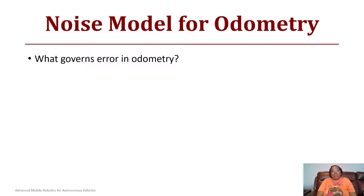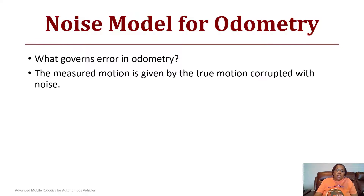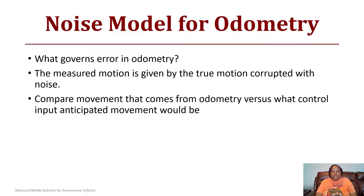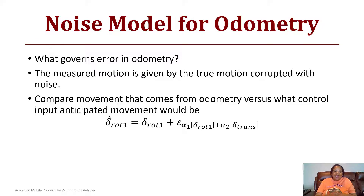What governs error in odometry when you have noise? The measured motion is given by the true motion but it's always going to be corrupted with some noise. Since this is an electronic device, you have to compare the movement that comes from odometry versus what the control input anticipated the movement would be. We model that as epsilon, a constant that we multiply to represent the noise.